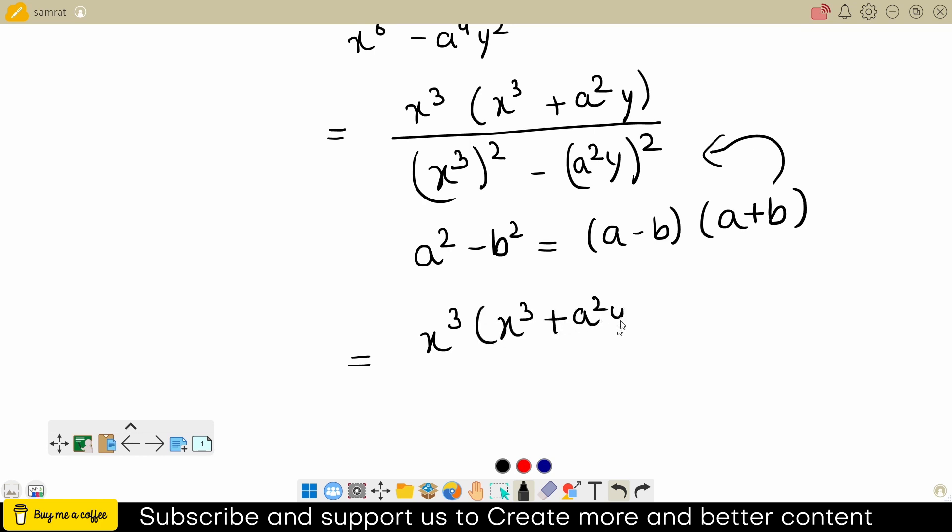a square y. Now after applying that identity, I will get x cube plus a square y in one bracket and x cube minus a square y in the other. Now I can cancel it out, and...